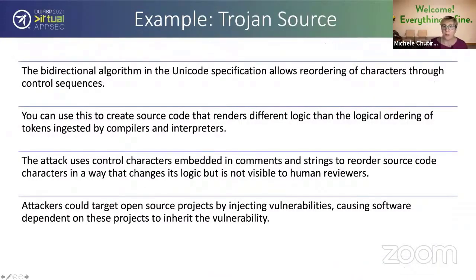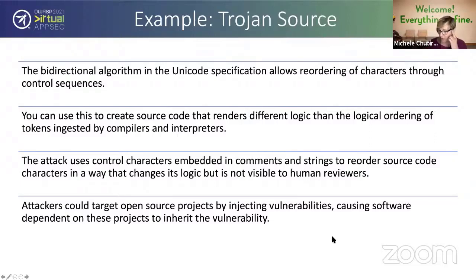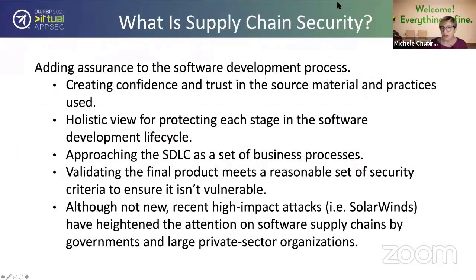An example supply chain threat is Trojan Source — the bidirectional algorithm in the Unicode specification allows reordering of characters through control sequences. You can use this to create source code that renders different logic than the logical ordering of tokens ingested by compilers and interpreters. This is frightening given heavy open source dependencies. It's very difficult to detect. I believe Rust is the only compiler that has added detection for this so far.